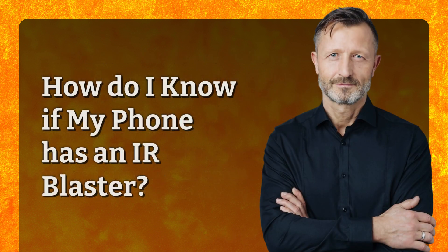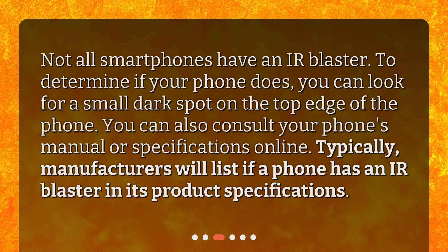Not all smartphones have an IR Blaster. To determine if your phone does, you can look for a small dark spot on the top edge of the phone. You can also consult your phone's manual or specifications online. Typically, manufacturers will list if a phone has an IR Blaster in its product specifications.